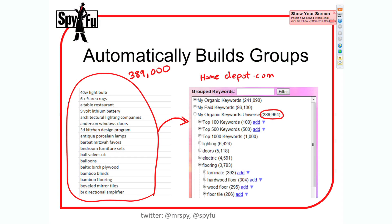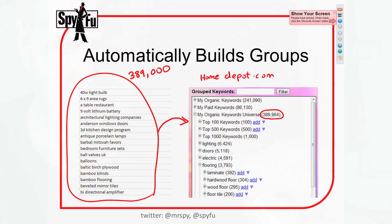It basically automatically builds these groups. As I was talking about Home Depot — right now if you use SpyFu, the Google Keyword Tool, WordTracker, or any of dozens or hundreds of keyword tools, you end up with a list, maybe a spreadsheet. If you want to do anything with those 389,000 organic keywords from Home Depot, you really need to organize them.